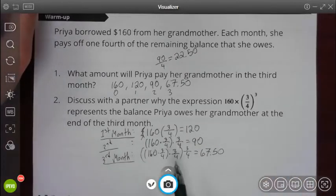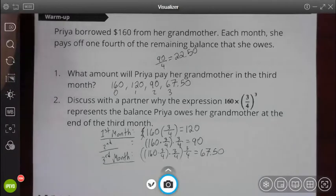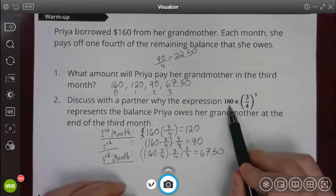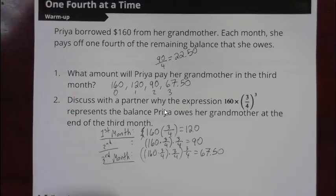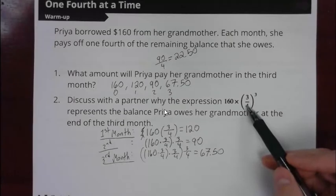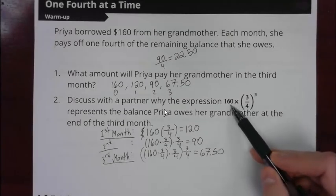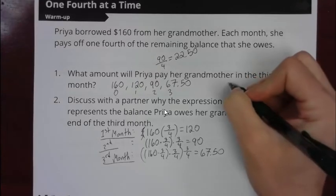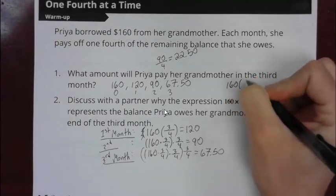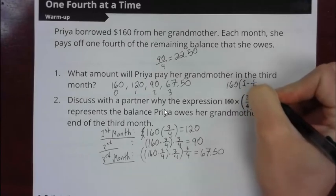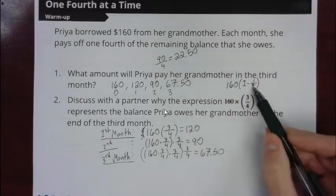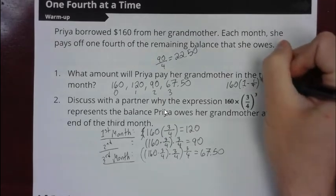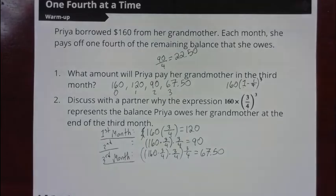You can see we multiply by three-fourths once, and then twice, and then three times. If we look at the function itself, we can see the 160 is representing the initial amount. The three-fourths is representing how much is being taken away. We're finding three-fourths of 160 each time because we're taking away a fourth. We could write it as 160 times one minus one-fourth, and then we'd be doing that for three months.